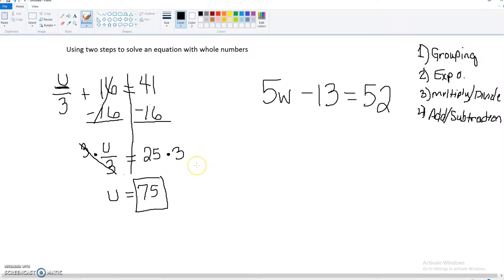Now the other type that you will see in this particular topic is similar to this one. We've got 5w, which means 5 times w, minus 13 equals 52. So we're going to draw a line down the equal sign.